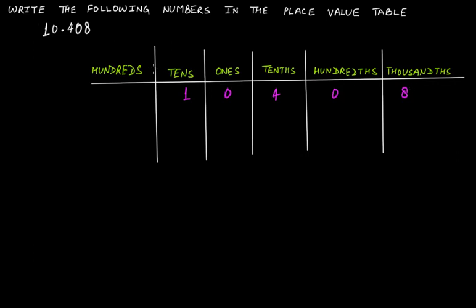At the thousandths place we have eight. There's no need to fill the hundreds place because we don't have any digit there, but if you want, you can fill it with zero — it simply means there are no hundreds in this number. You don't need to put anything there since the table will only draw tens, ones, tenths, hundredths, and thousandths.